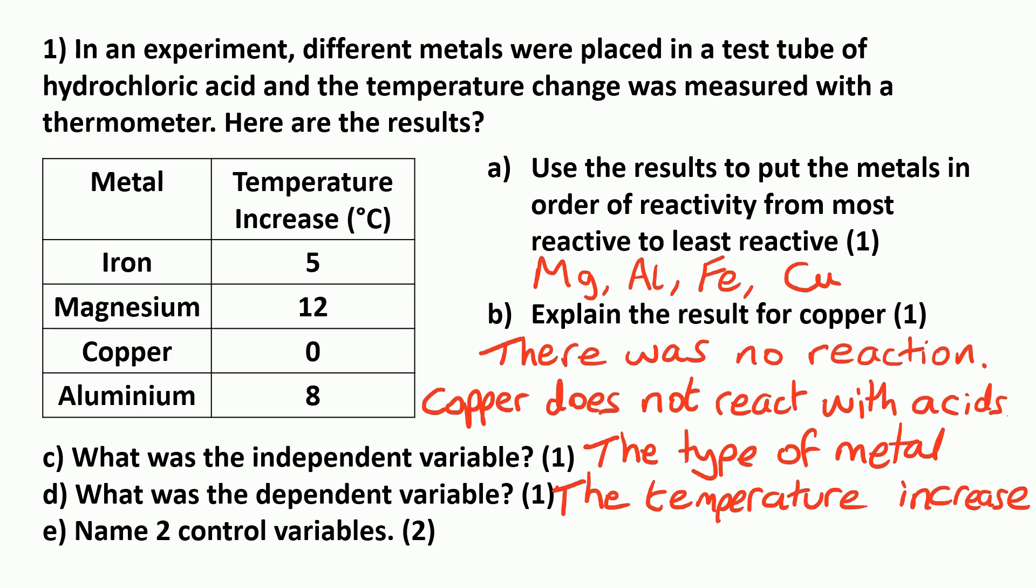And the control variables are the variables you need to keep the same. So in this one make sure you don't say the amount of something. We want to use words like volume and mass. If we're talking about liquids we say volume, if we're talking about a solid we say we're going to measure out the mass of it.